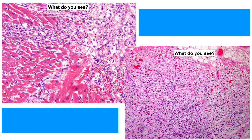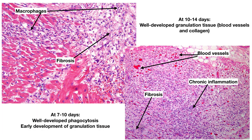On the left side, at lower power, you can see the macrophages and also some degree of fibrosis — a trichrome stain would bring that out — with strand-like material in between the cells. On the right side, it is much better developed: you can see some inflammation, blood vessel formation, and fibrosis; the acellular pink material in between would stain with trichrome. At 7 to 10 days, you see well-developed phagocytosis and early development of granulation tissue. At 10 to 14 days, you see well-developed granulation tissue, blood vessels, and collagen — once again showing a spectrum.